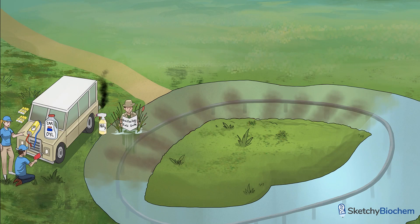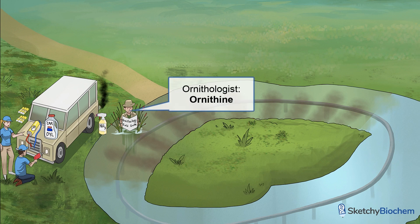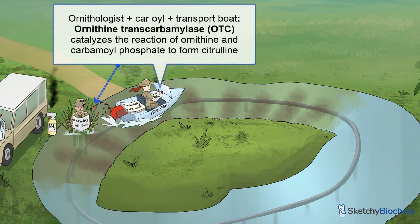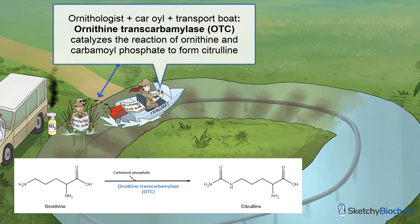Ahead, an animatronic ornithologist trudges through the turbid torrent — limber up the lips before you try that one at home, kids. He's studying the migration patterns of cassowary birds, which are considered to be the most dangerous birds in the world. We'll call him ornithine. A fellow ornithologist floors her transport boat, spraying car oil all over ornithine.